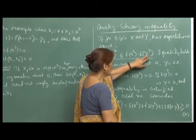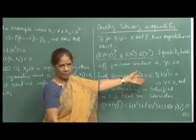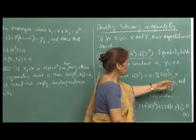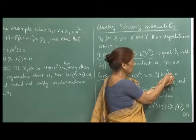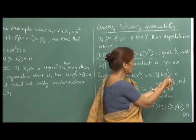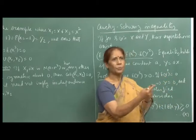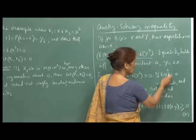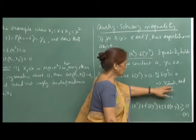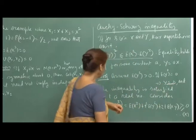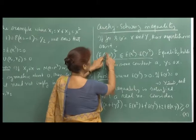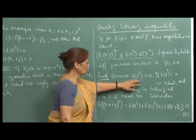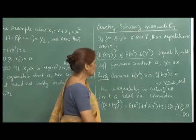We assume E(Y²) is positive — if E(Y²) = 0, since Y² is a non-negative random variable, it would mean Y = 0 with probability 1, and the inequality would trivially hold as equality with both sides equal to 0. So there is no loss of generality in assuming E(Y²) > 0.